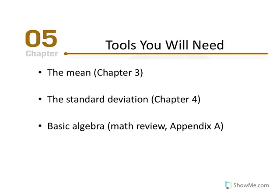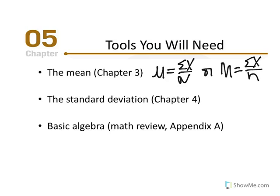Tools you will need. This chapter requires that we have mastered the concept of the mean — one of the measures of central tendency. We have two different equations: for a population, it's the sum of X over population size; for a sample, M equals the sum of X over N. We'll also need to have mastered the concept of standard deviation, which refers to the average or standard difference between scores in a distribution and the mean of the distribution.